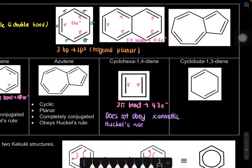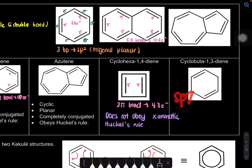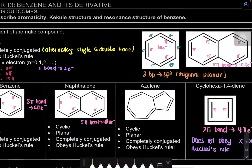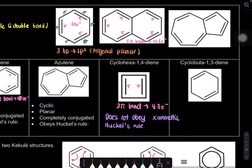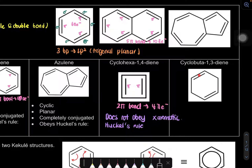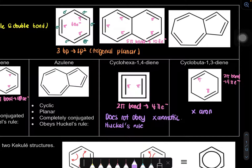Next, cyclobutadiene: it is cyclic, and checking if it's completely conjugated — the pattern goes double, single, single — so it does not alternate properly as double, single, double, single. It also has 2 pi bonds, giving only 4 pi electrons, so it does not obey Hückel's rule either. Therefore, this compound is also not an aromatic compound.